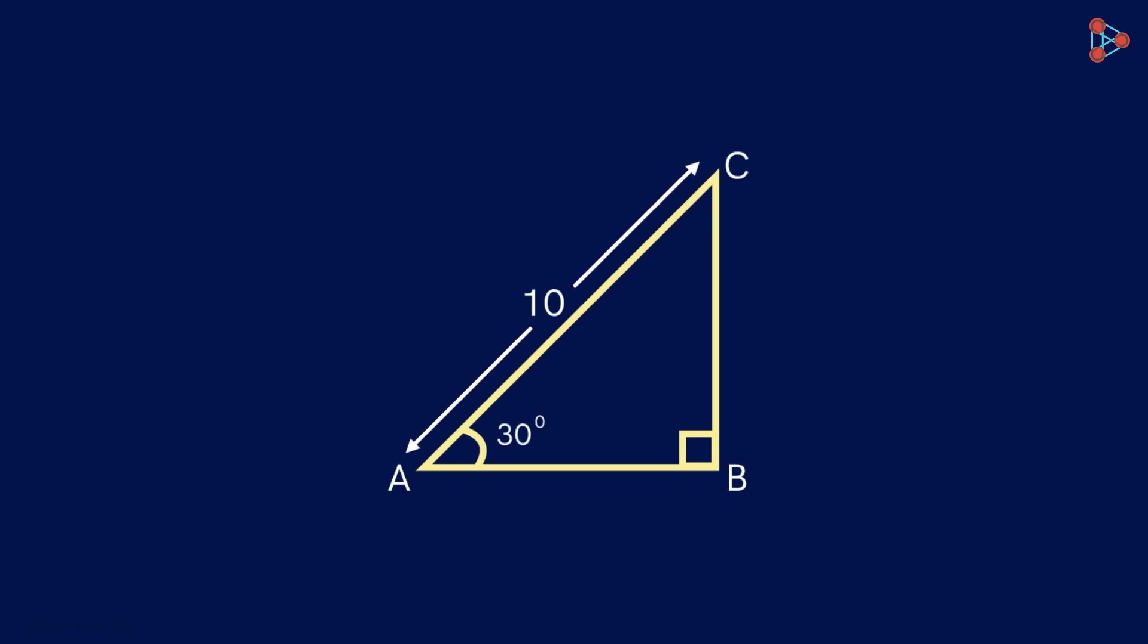Look at this right angled triangle ABC. Using this information, can you find the length of these two sides? Yes. Say we first want to find the length of this side. It's opposite to this angle and we know the length of the hypotenuse as well.